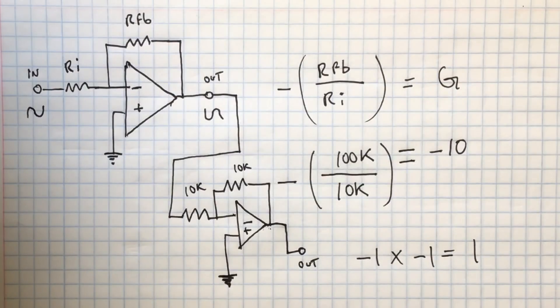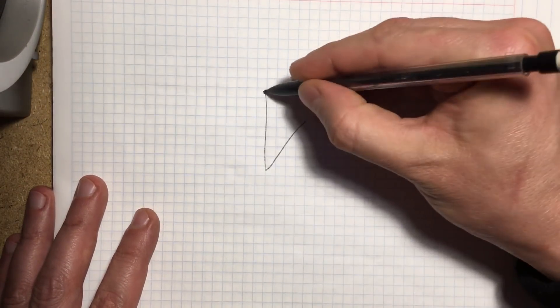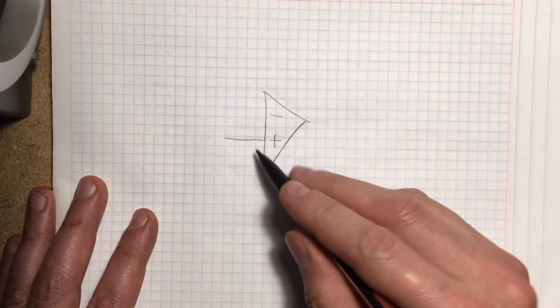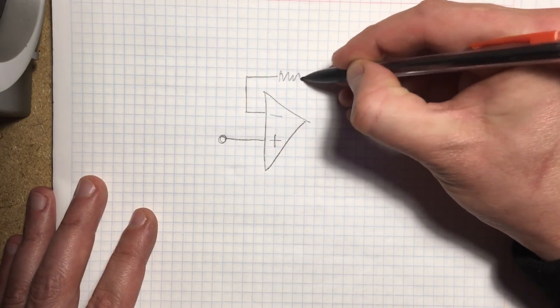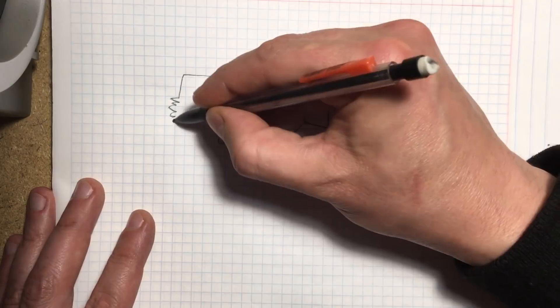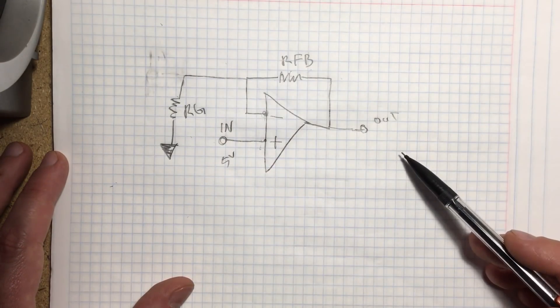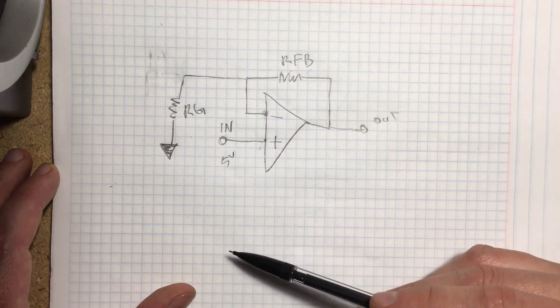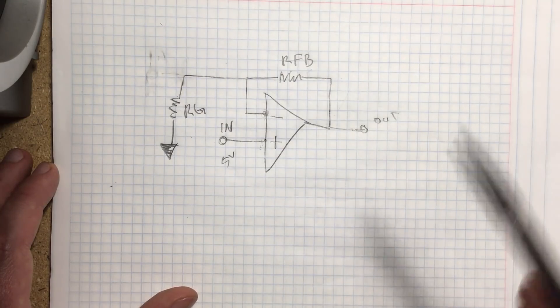Now the other way that you could get gain without inversion is a different configuration of the op-amp, where you have the input actually going into the non-inverting input, right? And you have... your feedback is always going to be negative. And now you have a resistor to ground. Now this is the non-inverting amplifier configuration. It's actually the same circuit from the op-amp's point of view. You still have the same resistors and the op-amp doesn't know that at the non-inverting input there's now a signal instead of ground.